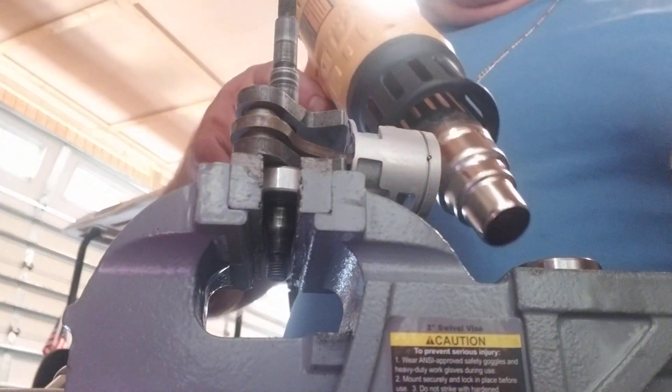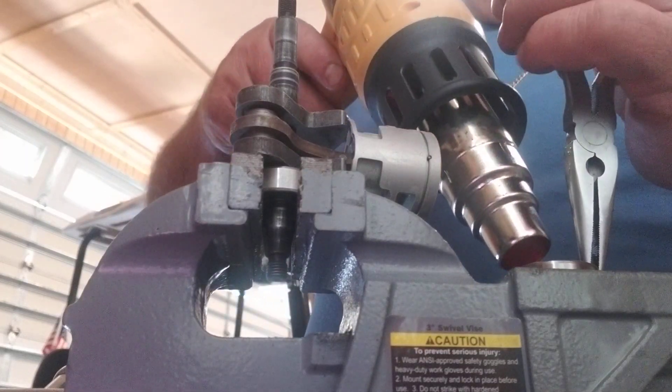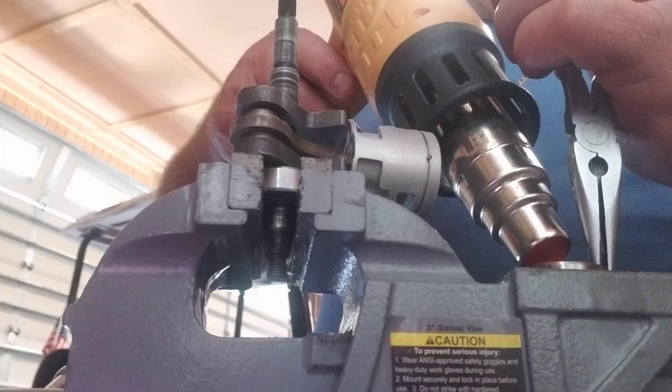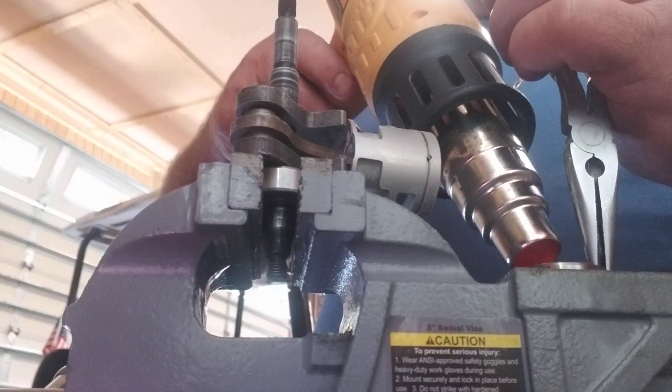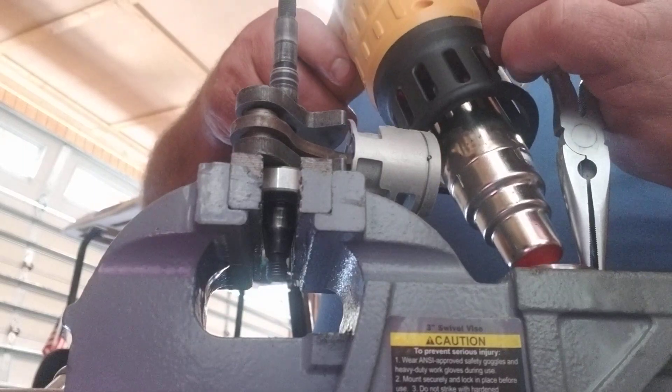I froze the shaft overnight. I'm heating the bearing up to about 130 degrees for 3 to 5 minutes. Then I'll slide this right on using my hot air gun.